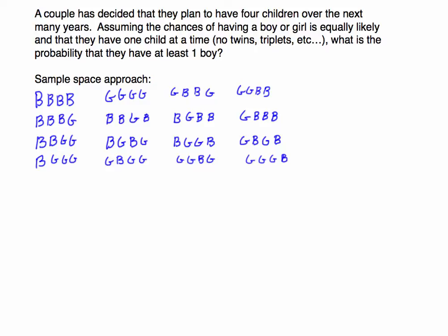I'm going to go through this problem first using the sample space approach. Since we're talking about a couple having four children, it's not too challenging to list out all the possibilities. I've already done that — these are all 16 possibilities, from all boys to all girls. Anything with a B is a boy, anything with a G is a girl. We have 16 because the order matters — think of ordering from oldest to youngest.